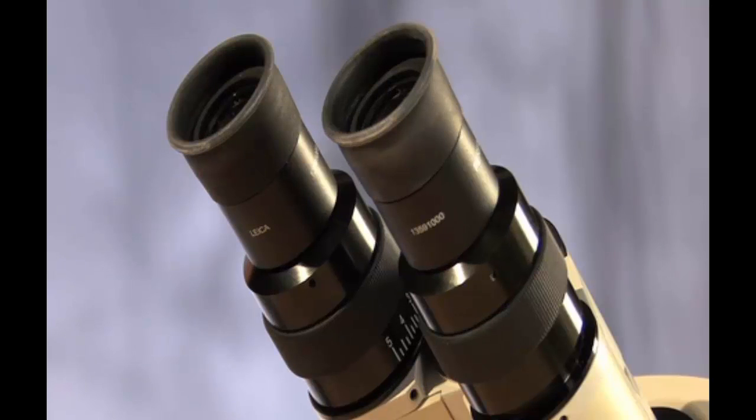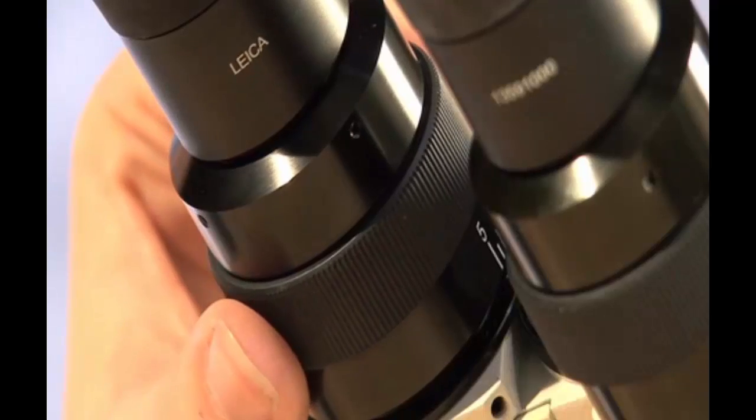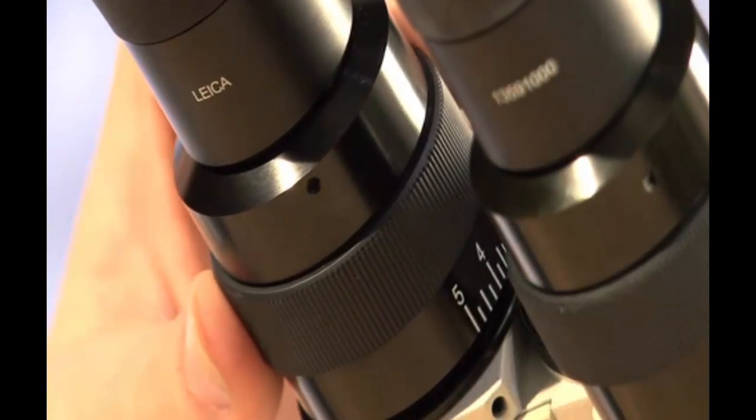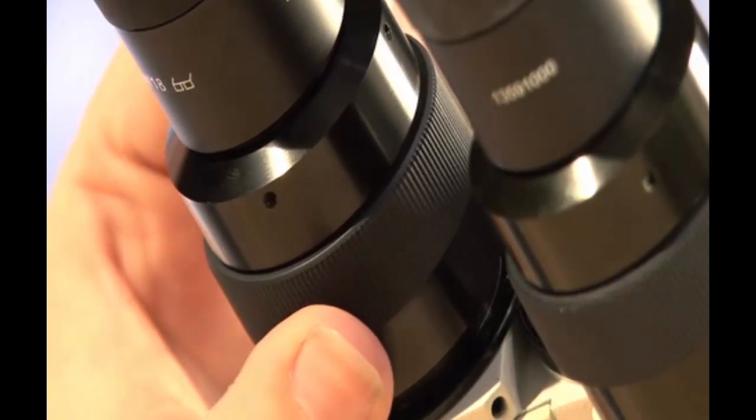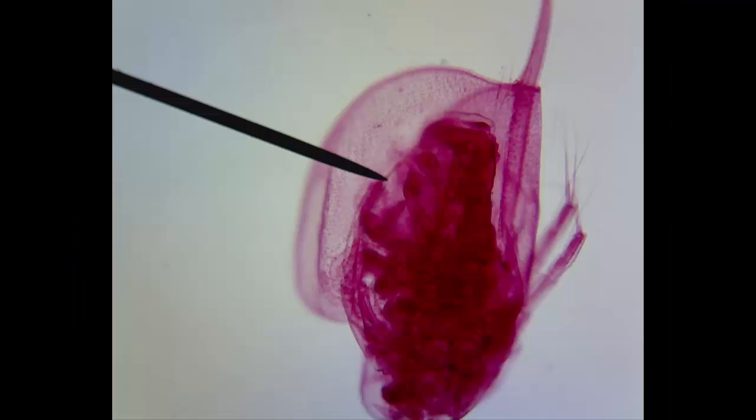Also, you will find in the left eye there is a diopter, or adjustment ring. This will allow for focusing your eyes when they're slightly different. Inside one of the ocular lenses, you will also see a pointer. This is a helpful tool when you are looking at a specimen under the microscope.